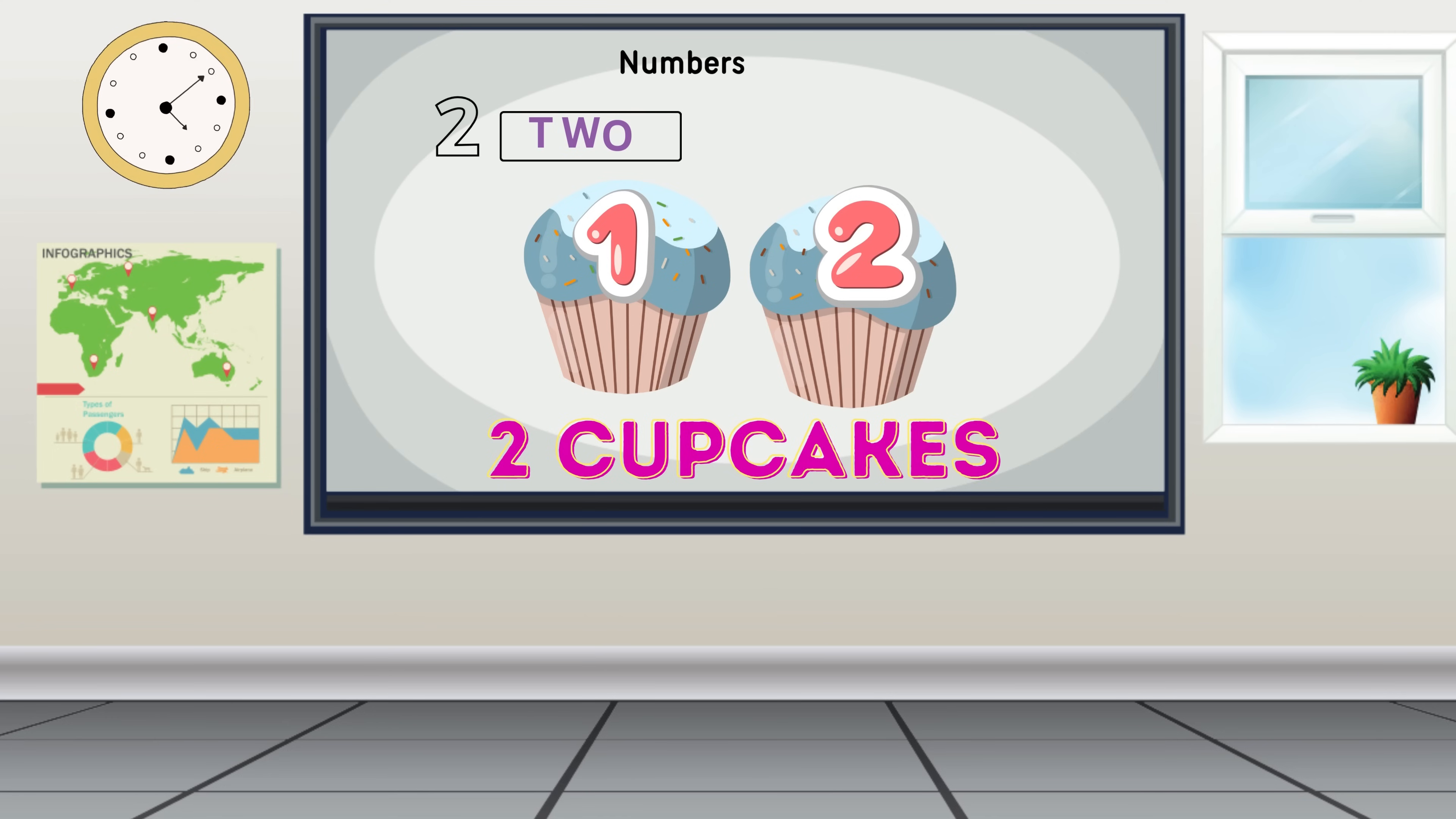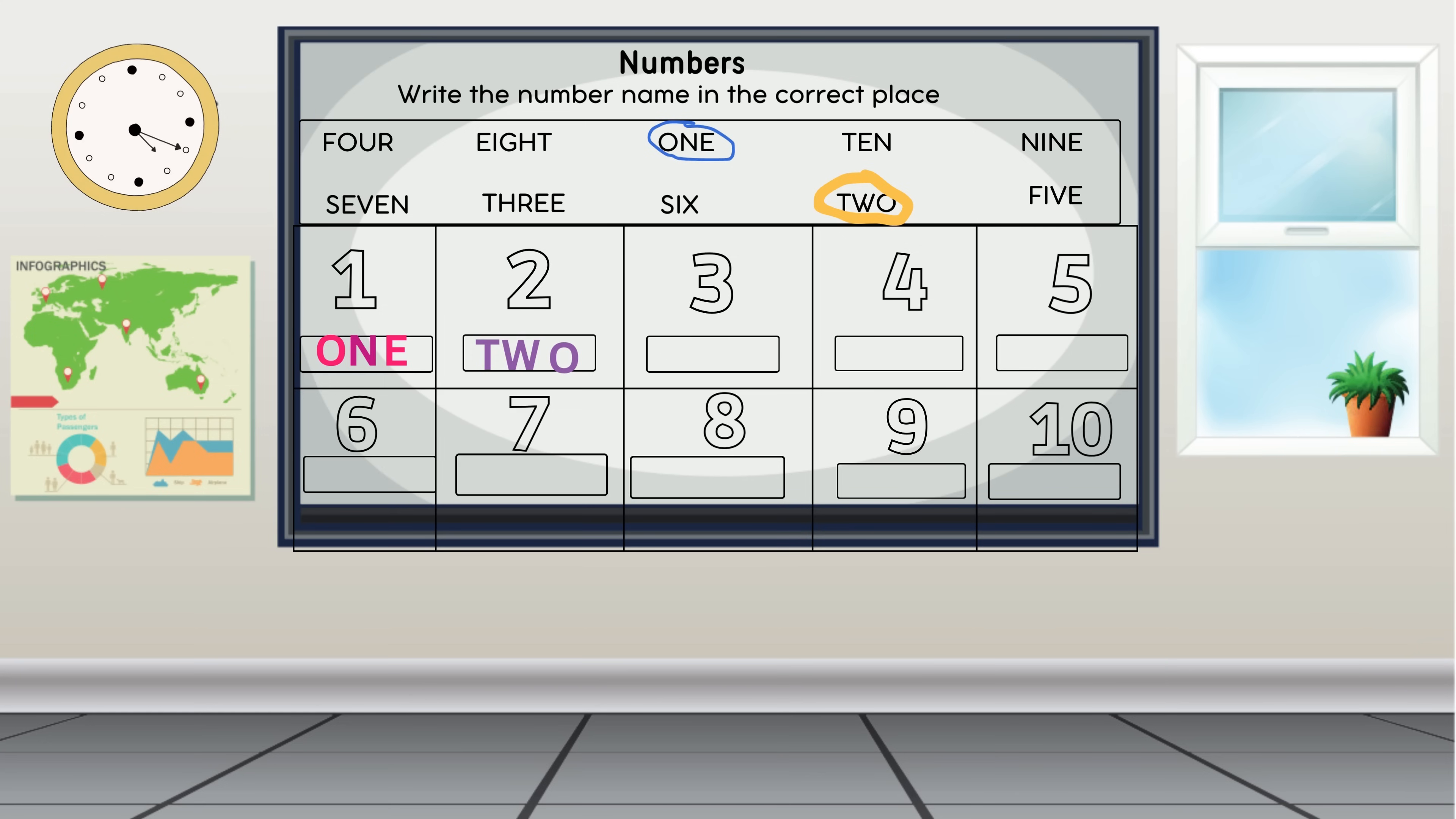Let's explore the next activity: three. It's time to find and circle the number name for three. Can you see the number name for three? Here we go. Now let's write and spell three: T-H-R-E-E. Great job!